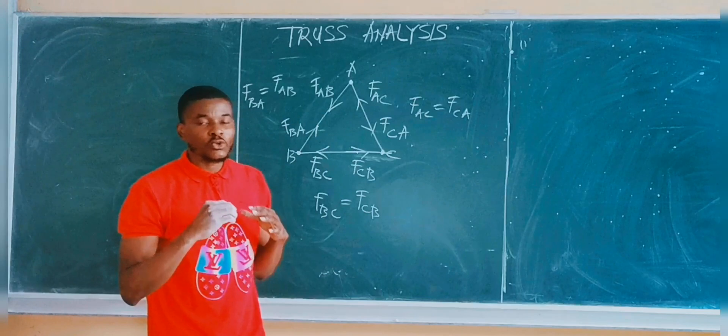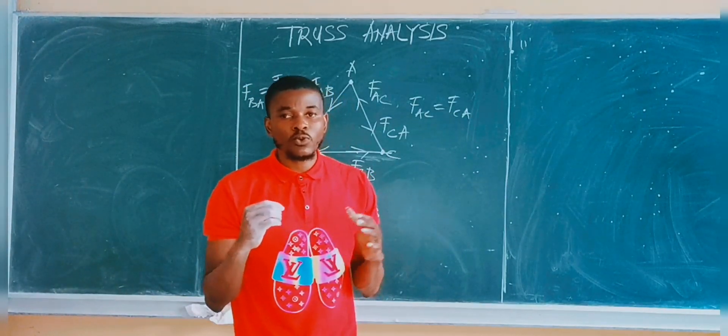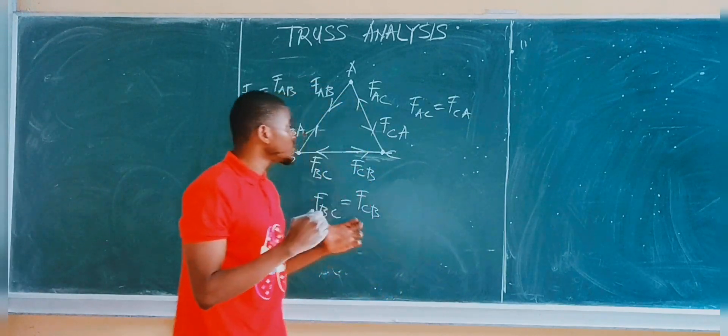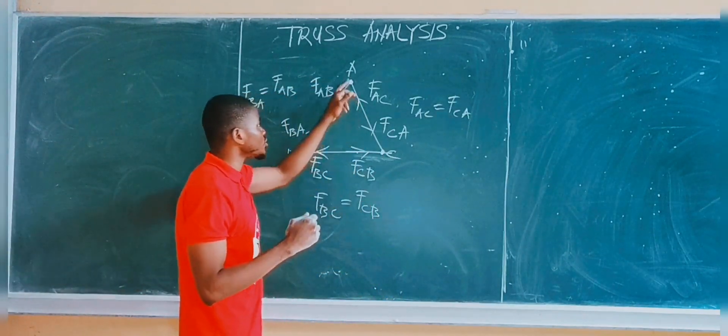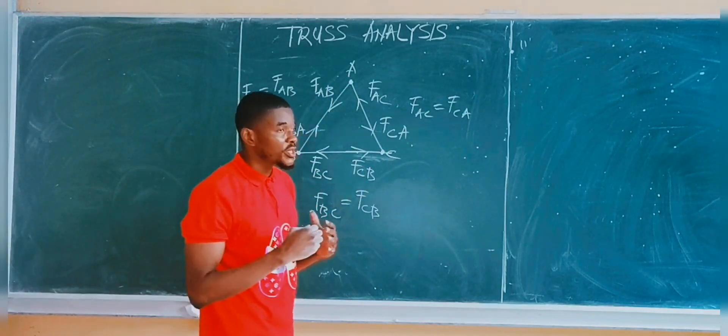So that's how truss systems work. Each member of every truss system carries two equal but opposite forces. And each point of a truss system are all joints. So this is joint A, this is joint C, and this is joint B.